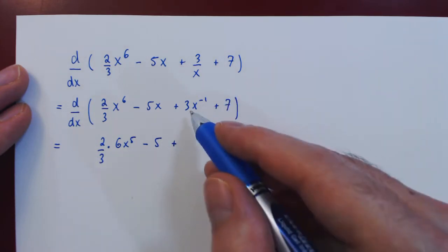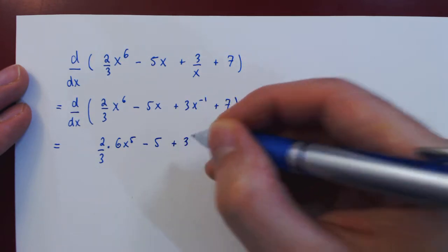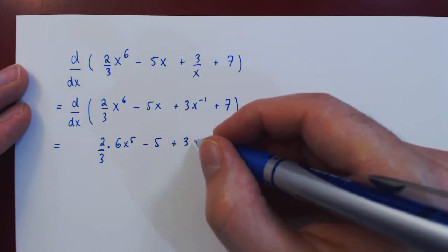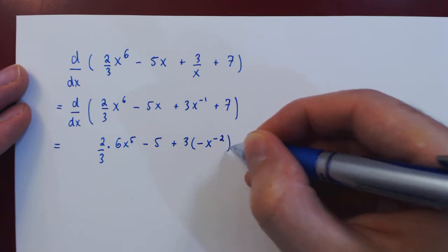Then plus, again 3 is a constant multiple of x to the negative 1, so 3 stays there as a constant multiple. We apply the power rule one more time, negative x to the negative 2, plus.